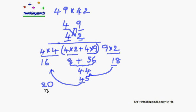So our answer will consist of this, this, this, and this. So the answer is 2058. It's very simple.